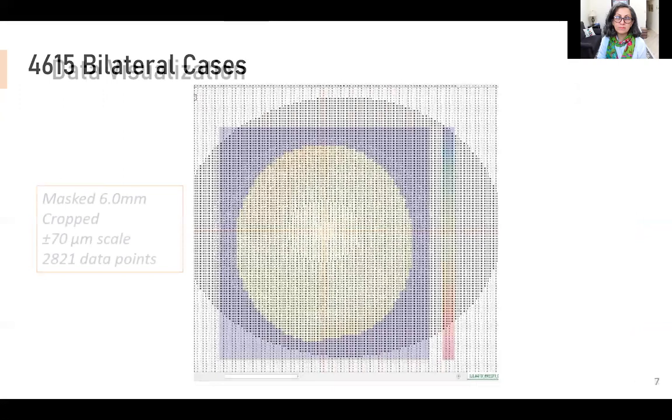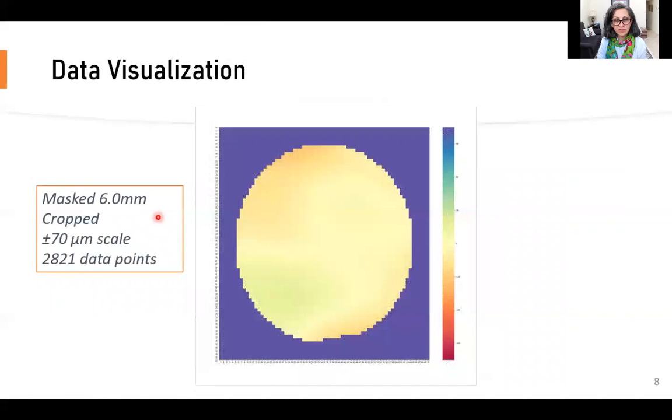Before data visualization, I masked the difference matrices to the central six-millimeter zone, cropped the extra data, and applied a plus-minus 70 micron scale to all 4,615 files, each containing close to 3,000 data points.